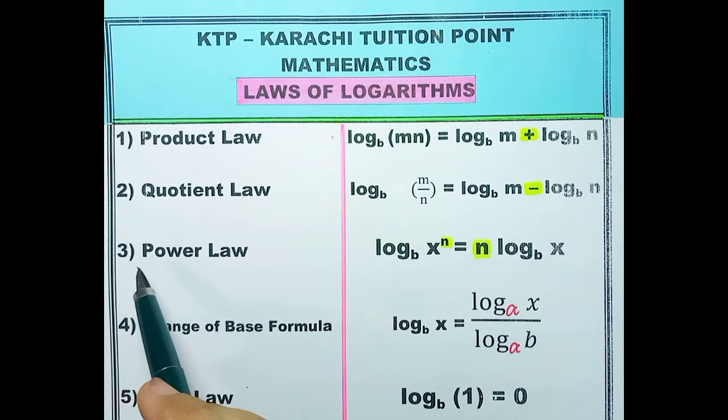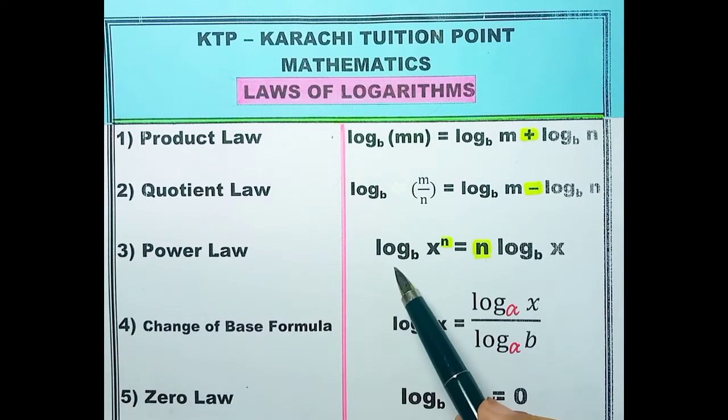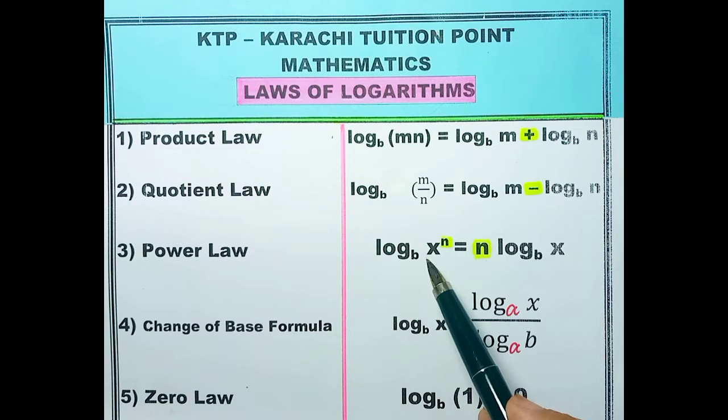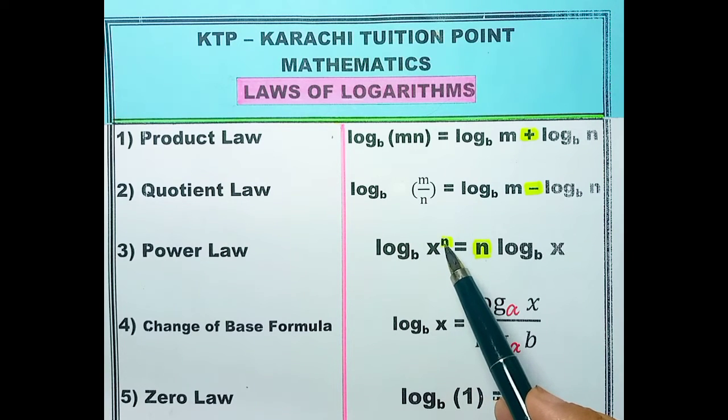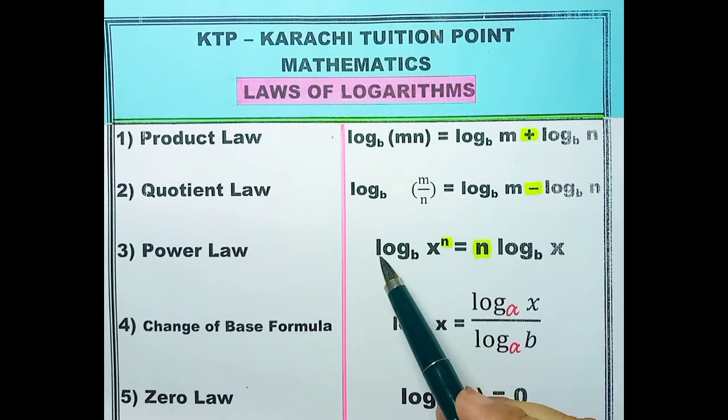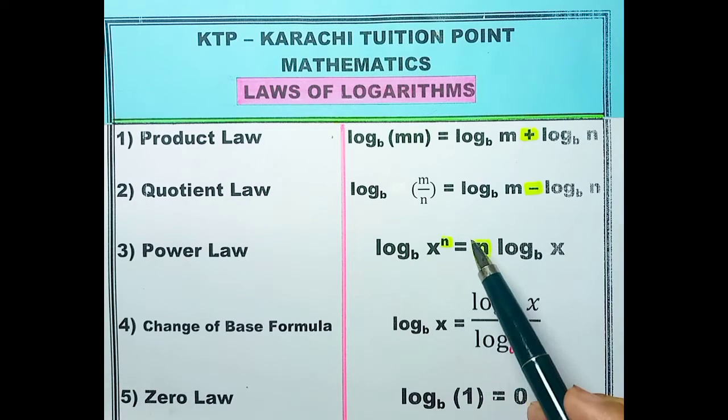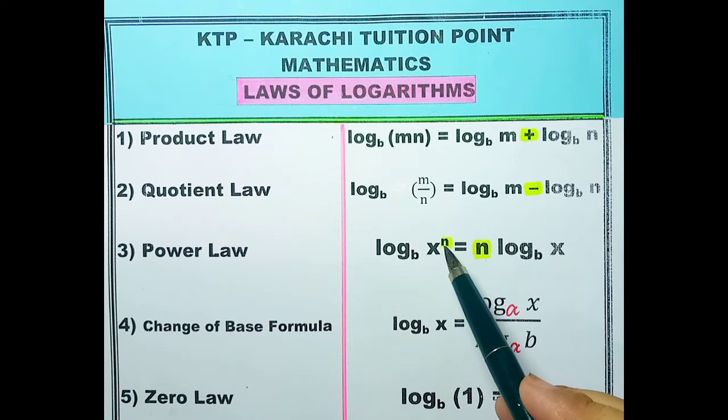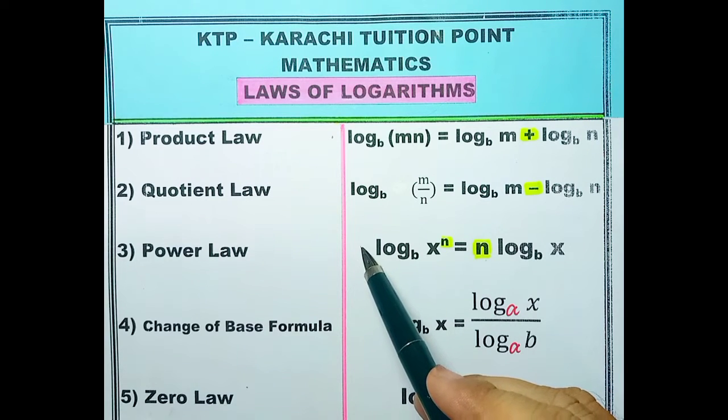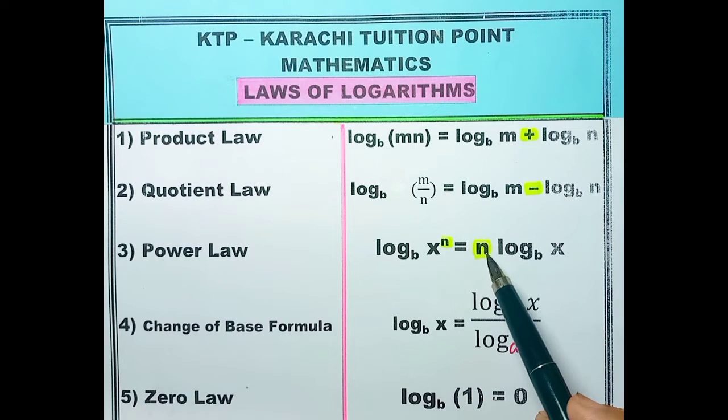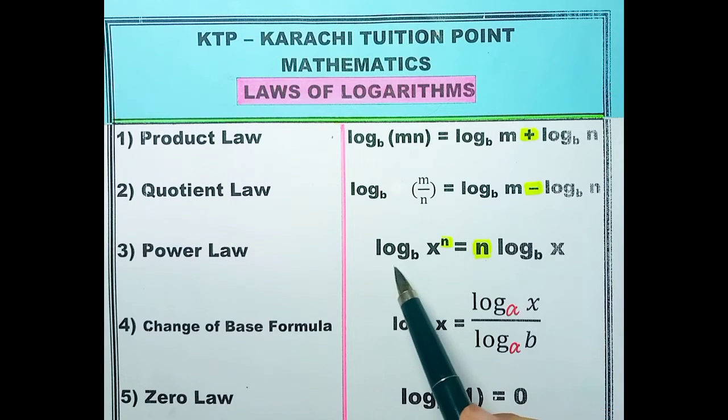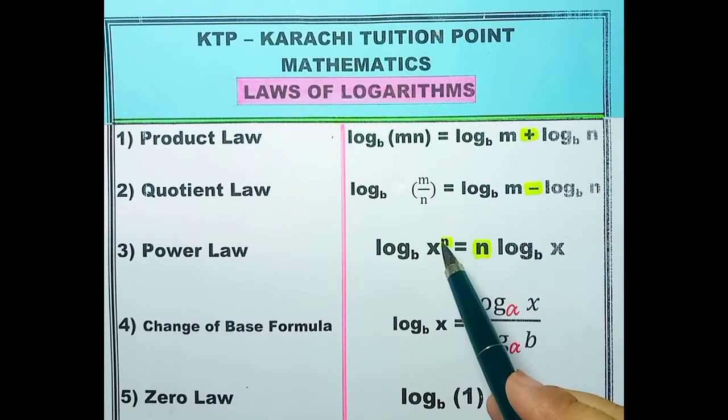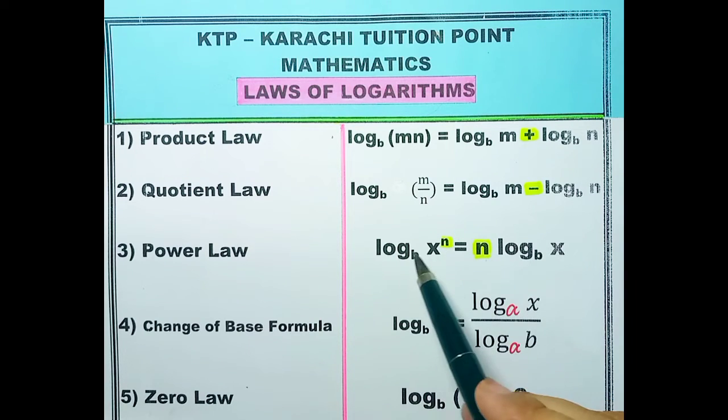Law number 3 power law. Log base b of x to the power n. The difference is you only need to do one thing - take the power of the argument and bring it to the front. You can see that's exactly what has been done here. There's no other change. Just n has been placed at the beginning, everything else remains the same.